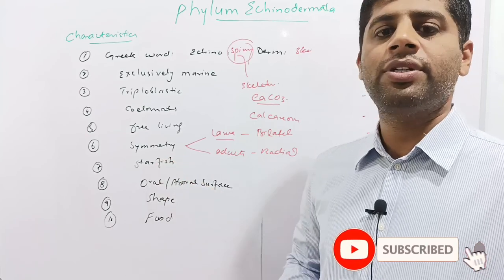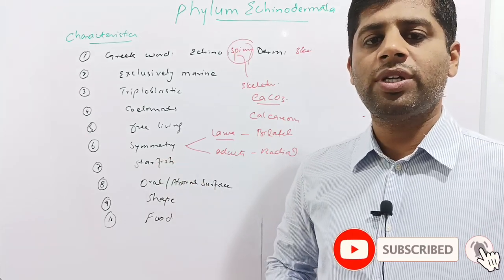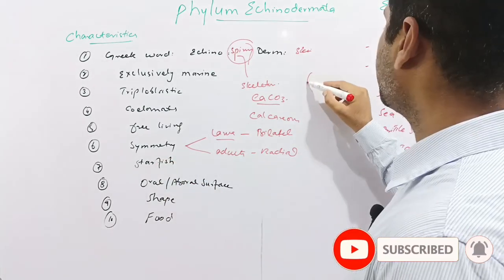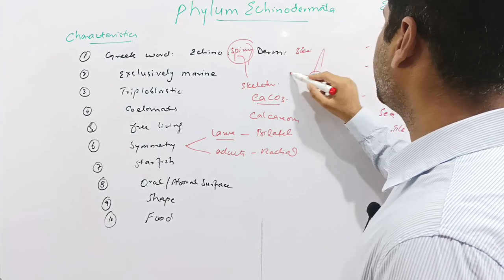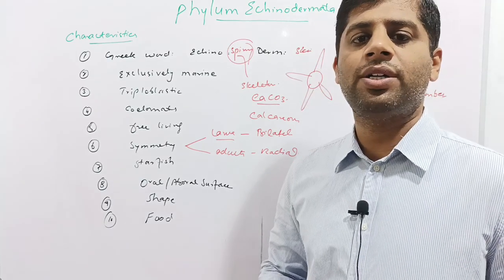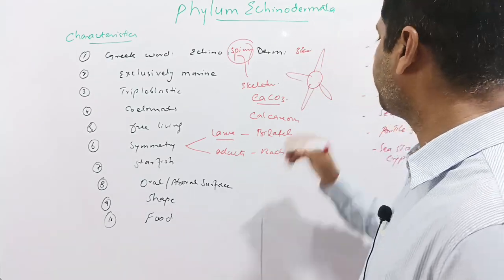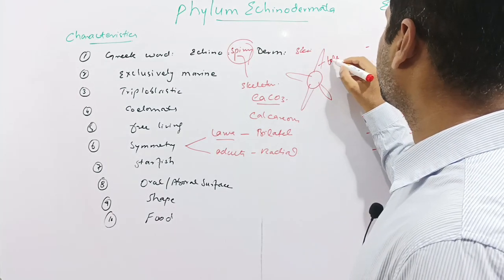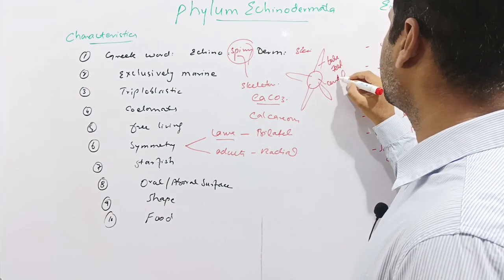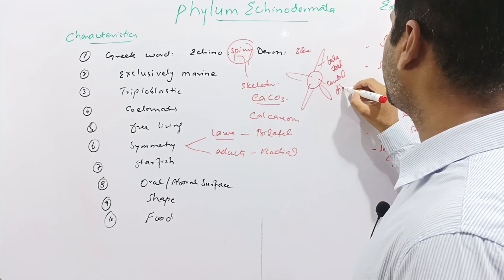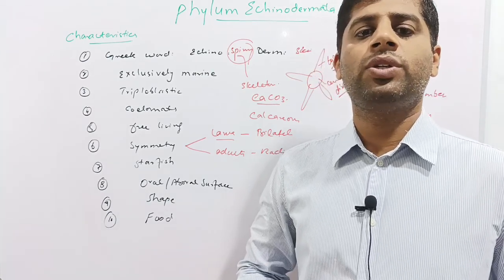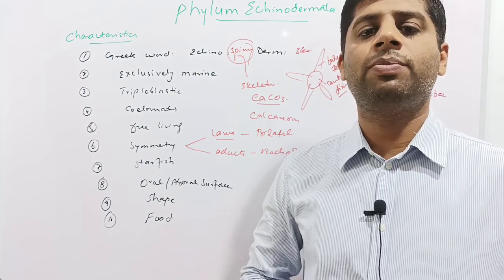Consider the starfish: it is an aquatic marine animal belonging to the Phylum Echinodermata. It has a central disc from which tubular arms arise. These tubular arms are called tube feet. There are five tube feet in the starfish and they are connected to the central disc.